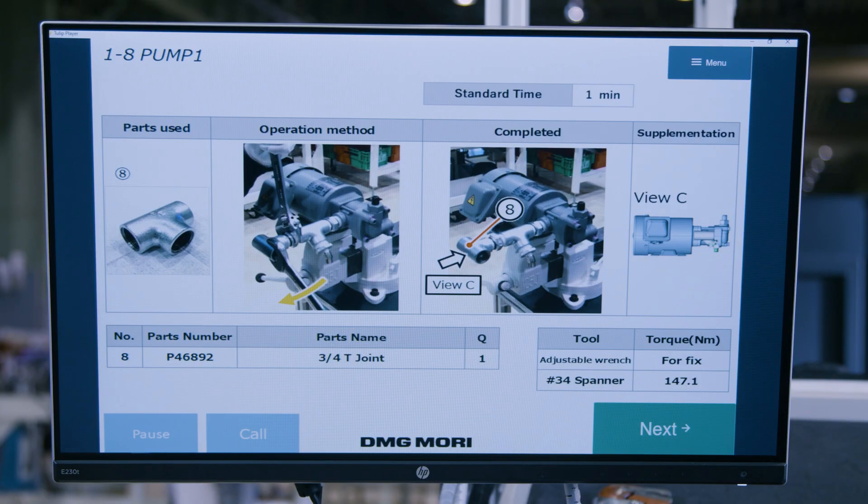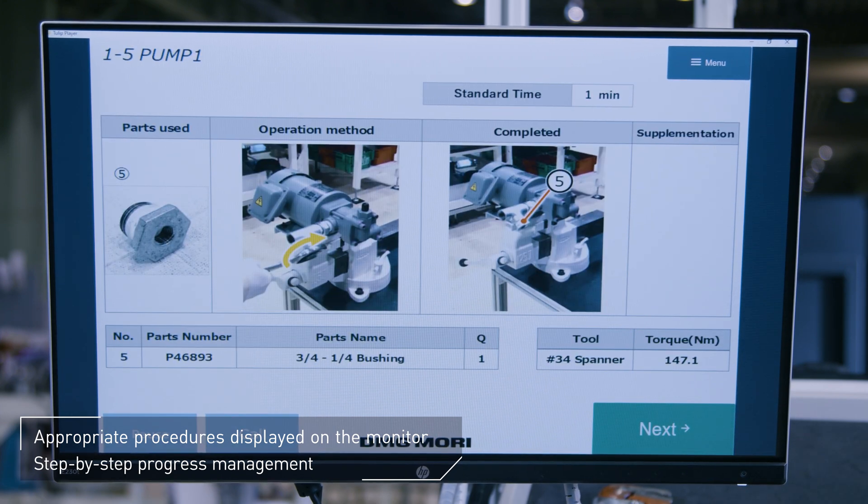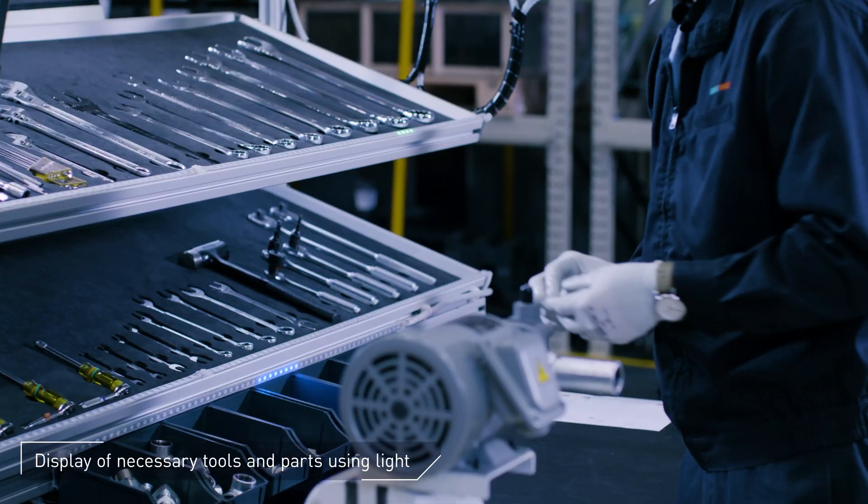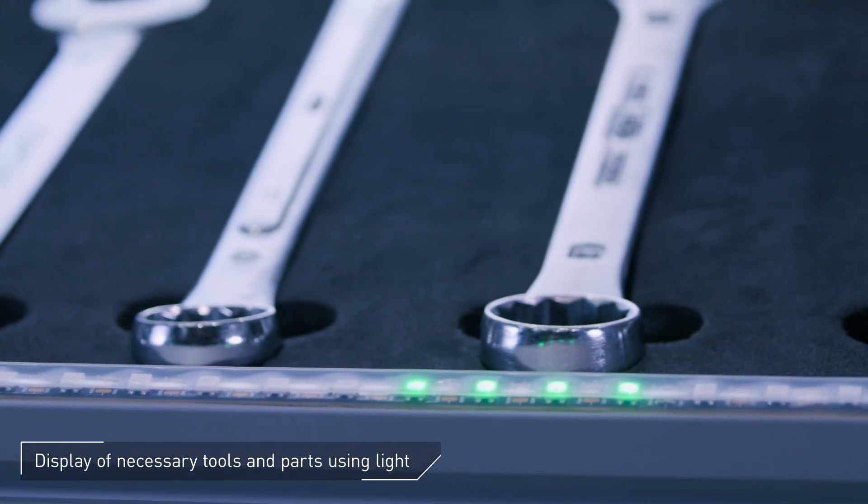Easy to understand procedures displayed on the monitor enable operators to handle fluctuating shop duties accurately. The monitor shows the necessary tools and parts, contributing to reducing operation errors and time.